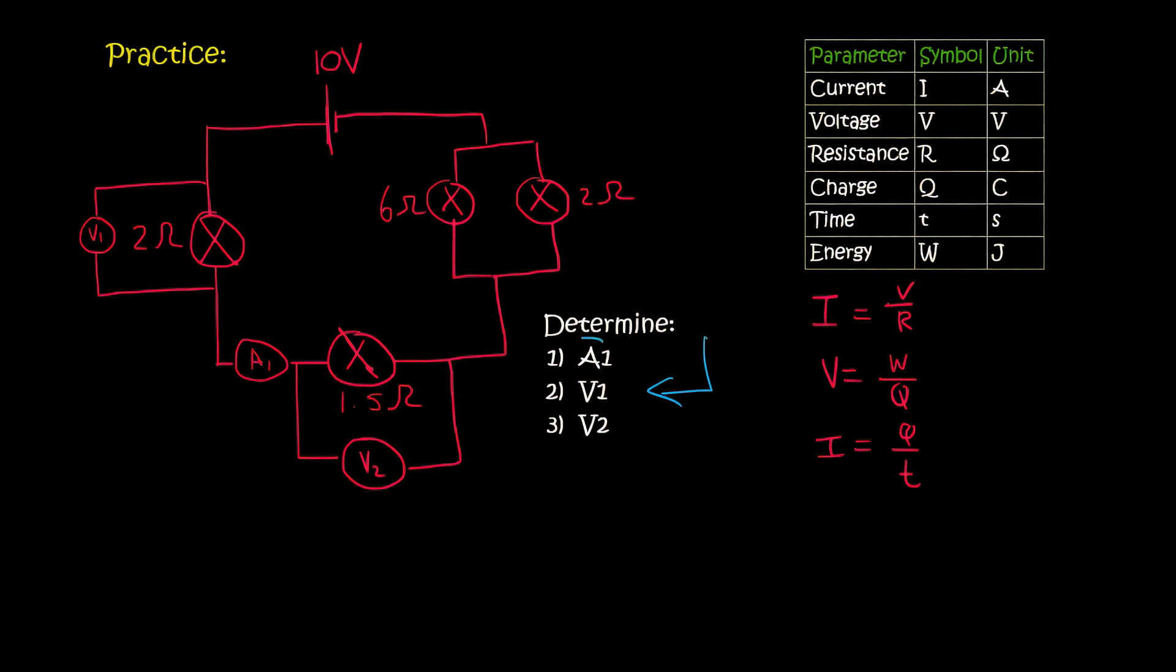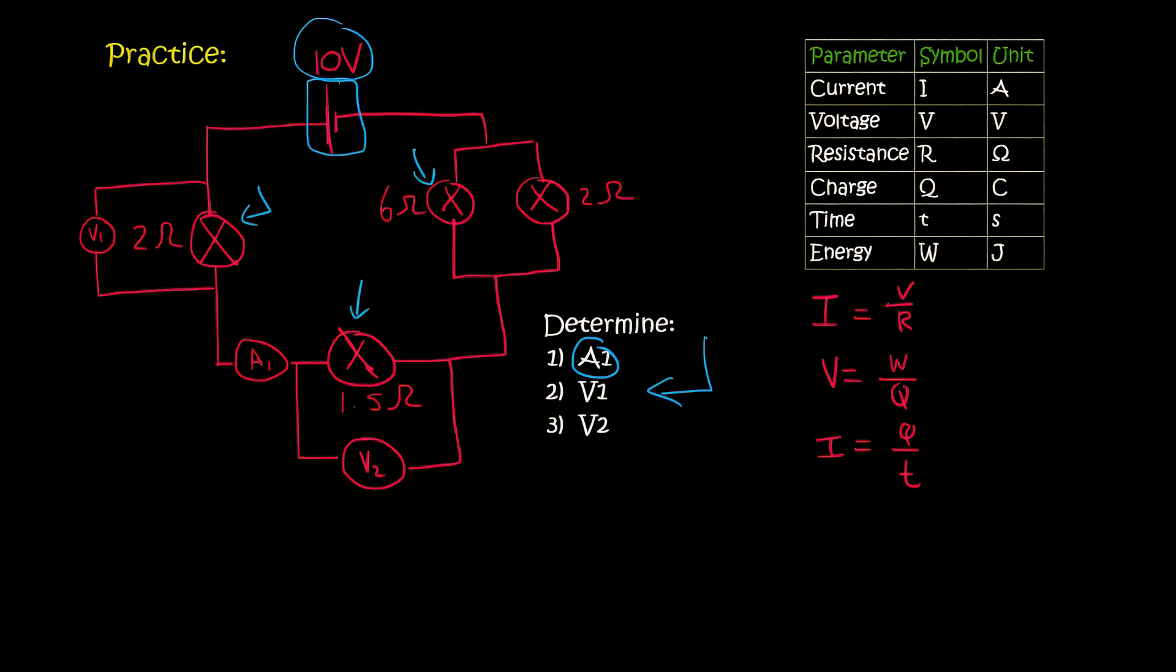The first question says determine A1. But let me first explain a few things. We've got a 10 volt battery, by the way this is the symbol for the battery. Well that's technically a cell, but I'm just going to call it a battery for now. Then these over here are light bulbs, so they are some type of resistance.